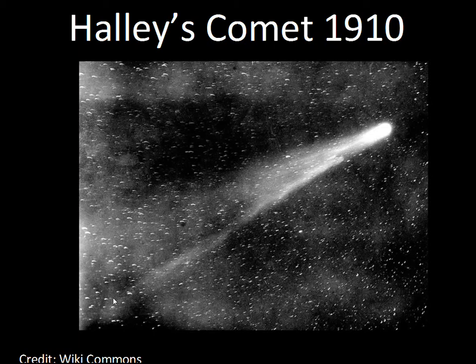Halley's Comet, seen in this 1910 photo, is called a short period comet — it's the brightest of the short period comets. Short period means a period less than 200 years. Short period comets have orbits a little closer to the ecliptic than long period comets, roughly within 30 degrees of inclination. Halley's Comet has been observed since 240 BC, which is the first confirmed observation, and every 76 years roughly since then it has been observed.